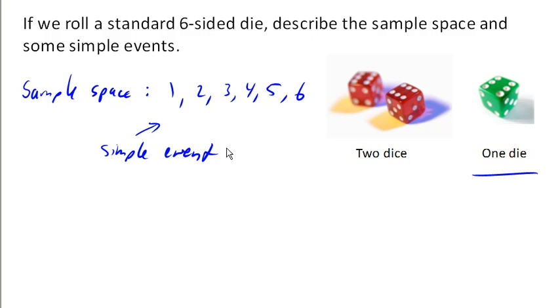Now it is possible also to talk about things called compound events. And compound events would be something like rolling something larger than 4, right? And in that event, there are two possible ways that you can achieve that event—you could either roll a 5 or a 6. Or another possible compound event would be rolling an even number. In this case, there's three possible ways to have that event occur.